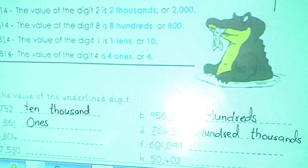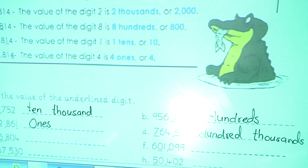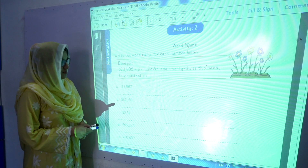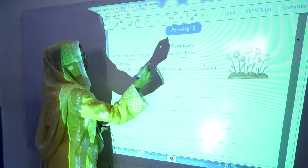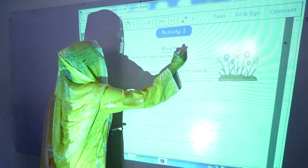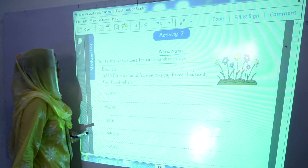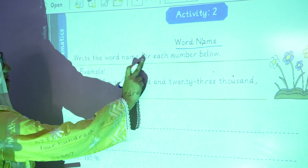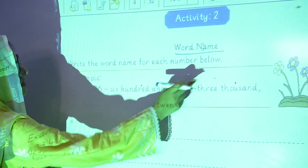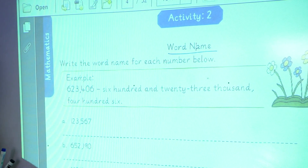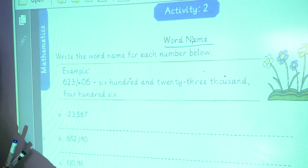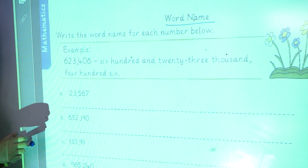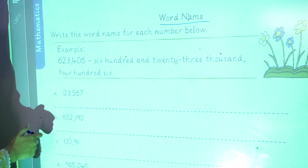In this way you will complete this activity. Now we are going to start activity number 2, that is word name. Write the word name for each number below. These are the numbers and you have to write their name. The first example is given for you.